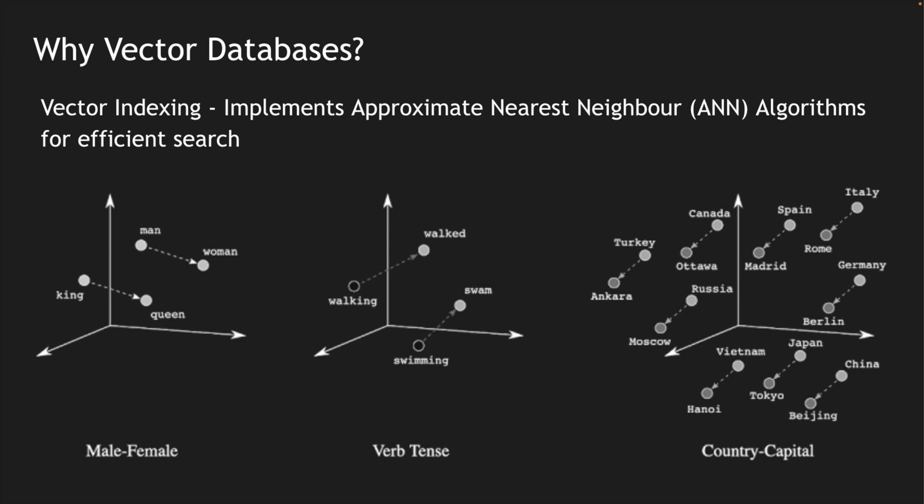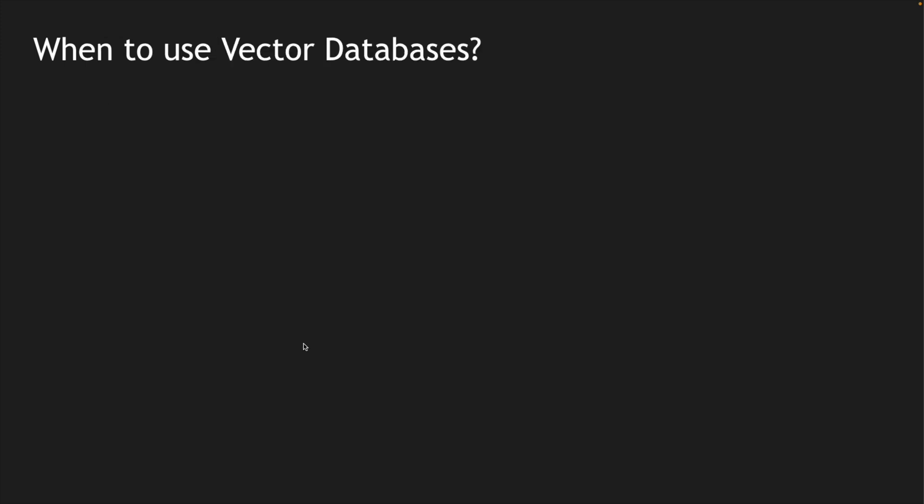There can be different distinctions between sentences and words — understanding the context, the difference between king and queen, man and woman, having verbs, sentences, etc. All these can be created as relationships and plotted within the database using vector indexes. Now when should you use vector databases? The first obvious example is a recommendation engine — if you want to correlate your text or input to create a recommendation, you can use vector databases.